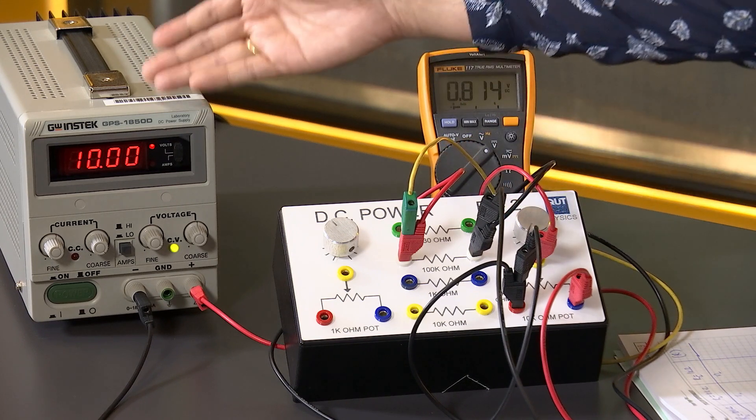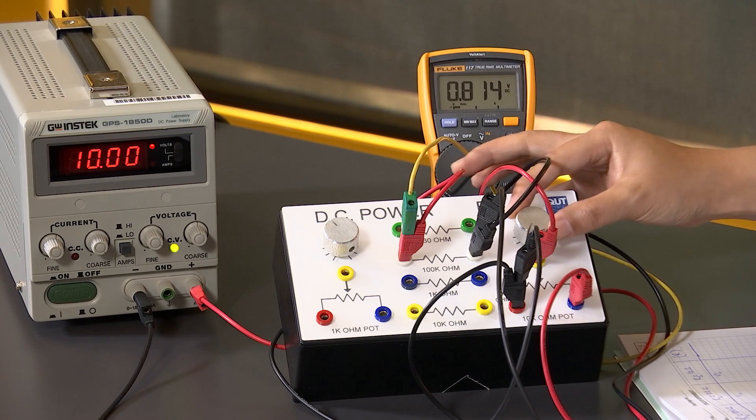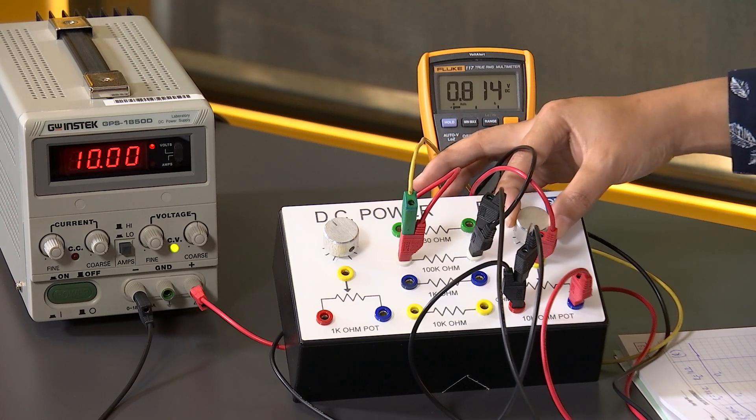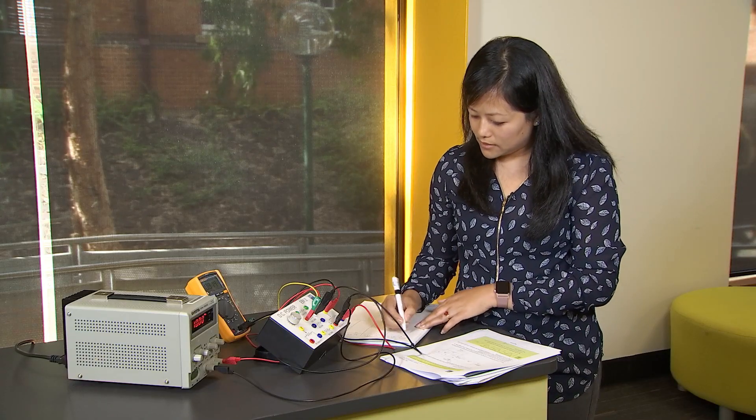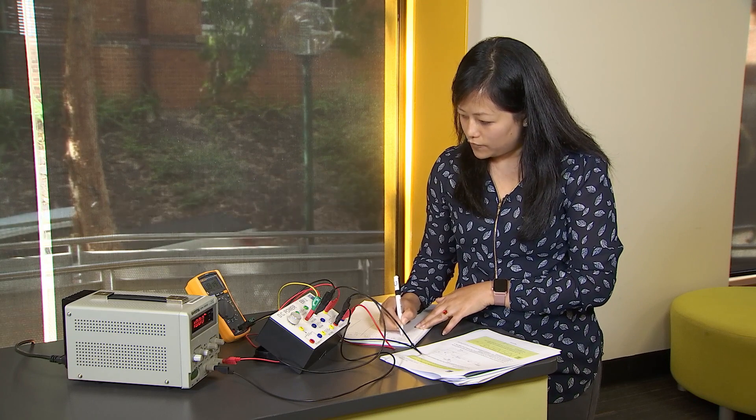So we first set our power supply to 10 volts, then we take our first measurement at the first marking of this potentiometer and record it. So the first one is 0.814 volts.